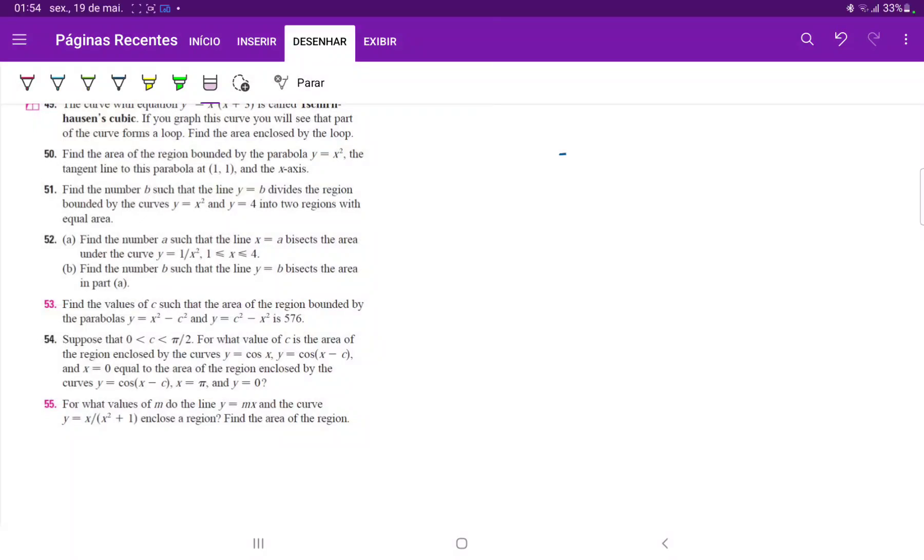So for number 53, it wants to find the values of c such that the area of the region bounded by the parabolas y = x² - c² and y = c² - x² is 576.